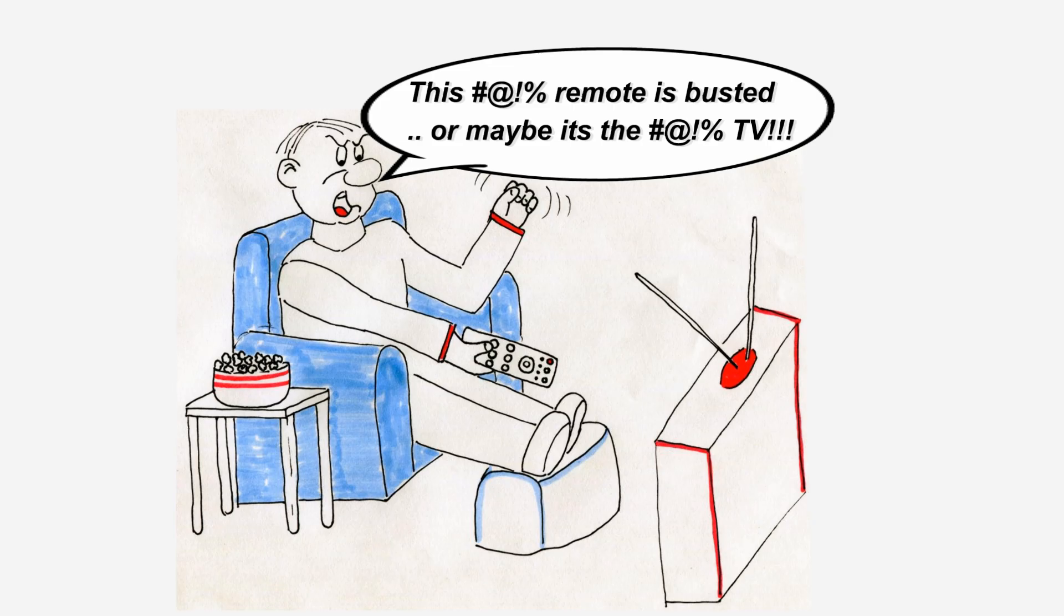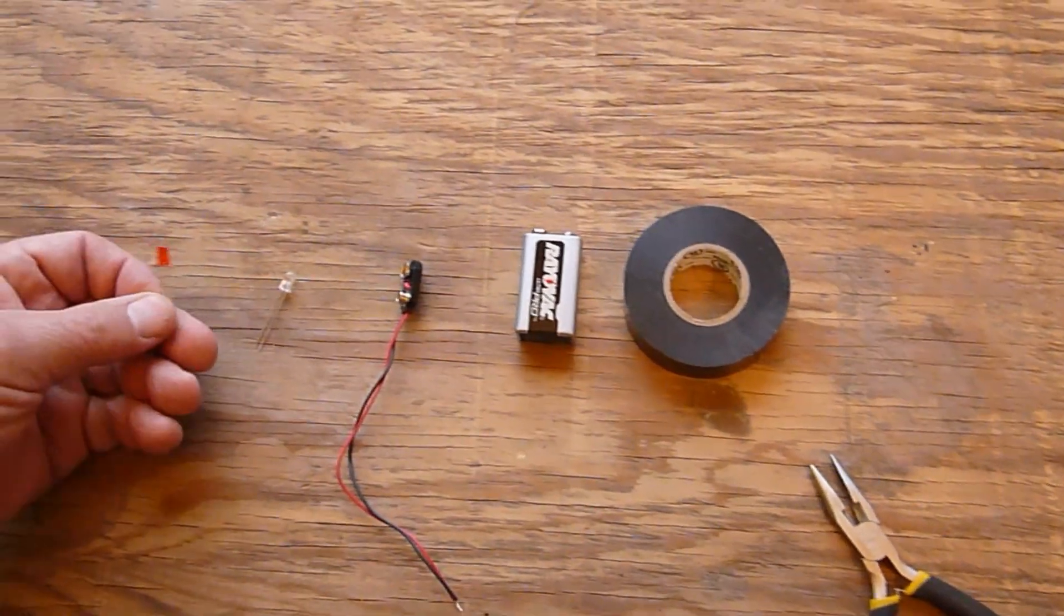When your remote controller doesn't work, even after putting in new batteries, you don't know if your remote's gone bad or the gadget the remote is supposed to control has gone bad. This tester, which can be made in less than five minutes, will tell you if your remote is working. This is what you will need.